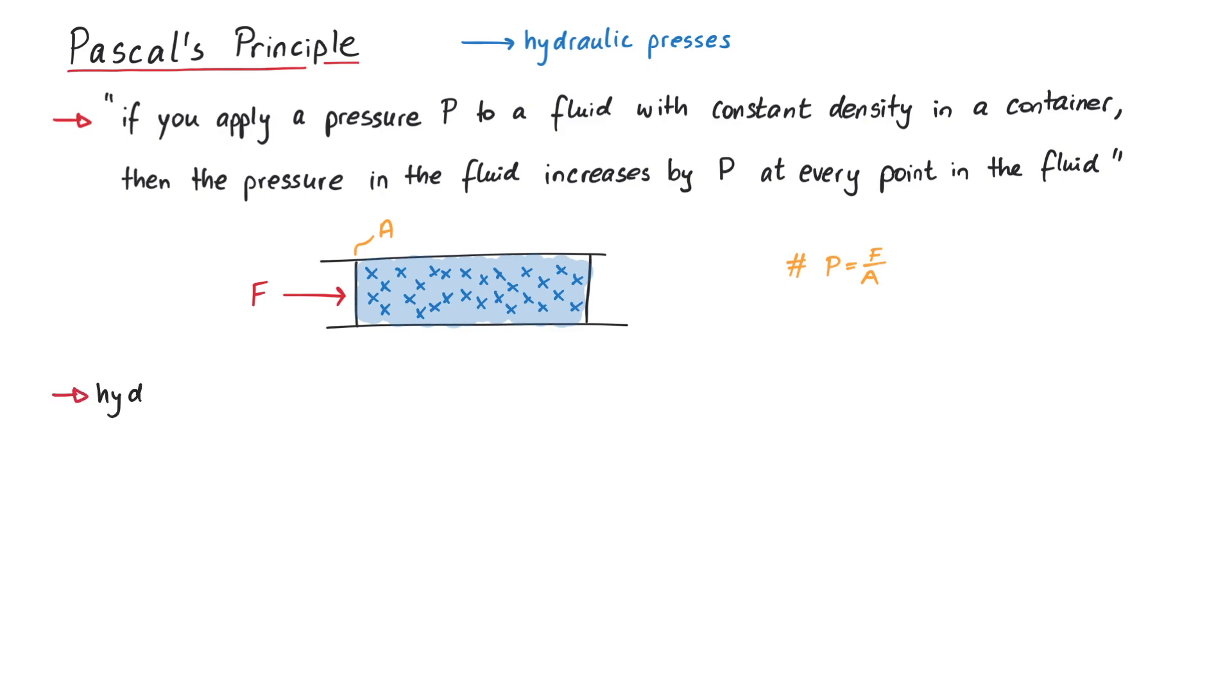This is what enables us to build hydraulic presses. Imagine a fluid container where the left and right ends have different sizes. If we apply a force on the left, then pressure will increase and exert a force on the right.